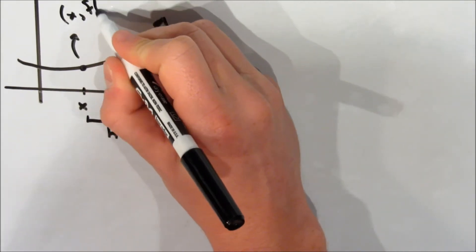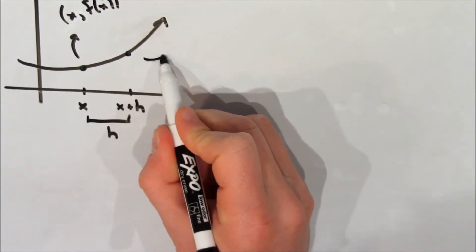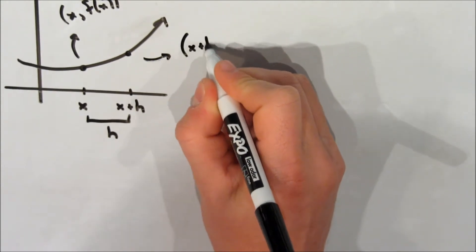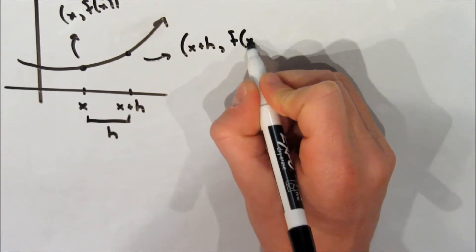So, our x-coordinate is x, our y-coordinate is f of x. Now, our second point, we know that the x-coordinate is x plus h because we just decided that. So, now our y-coordinate is f of x plus h.